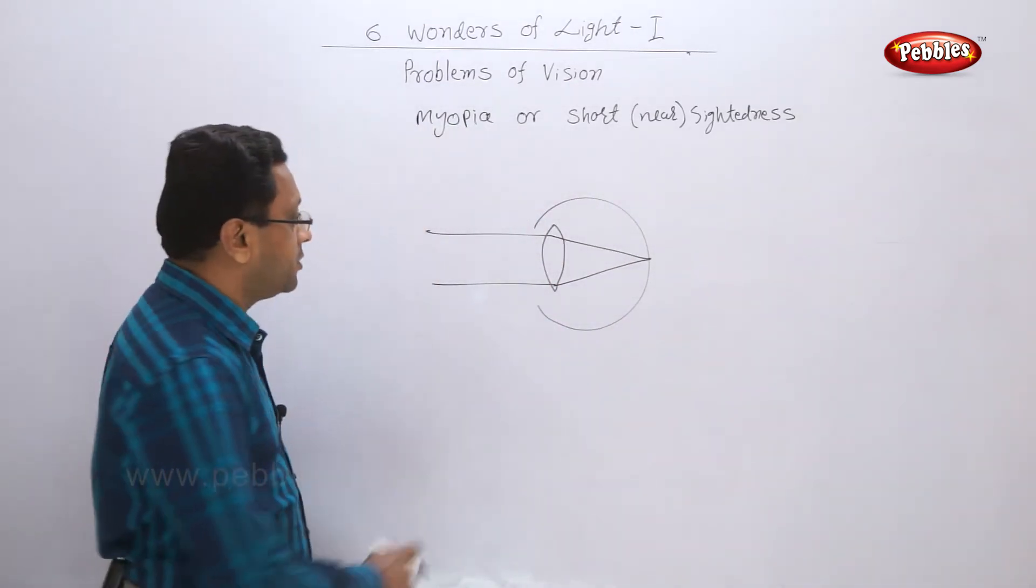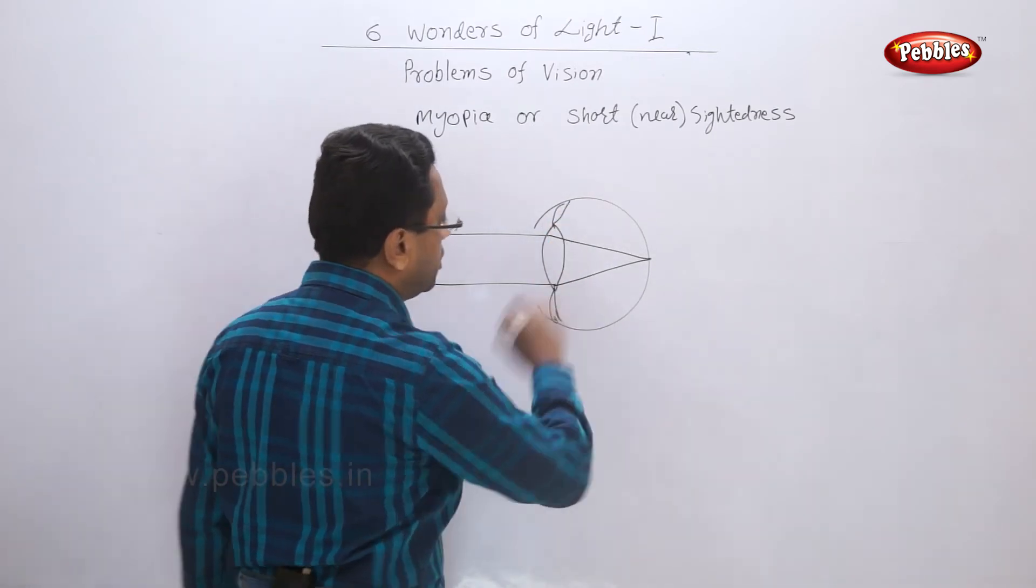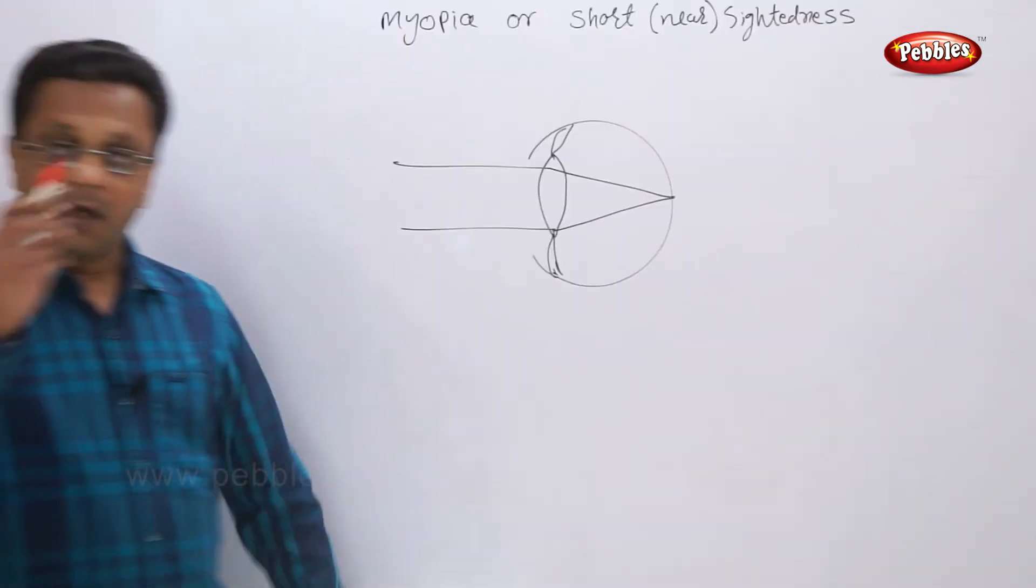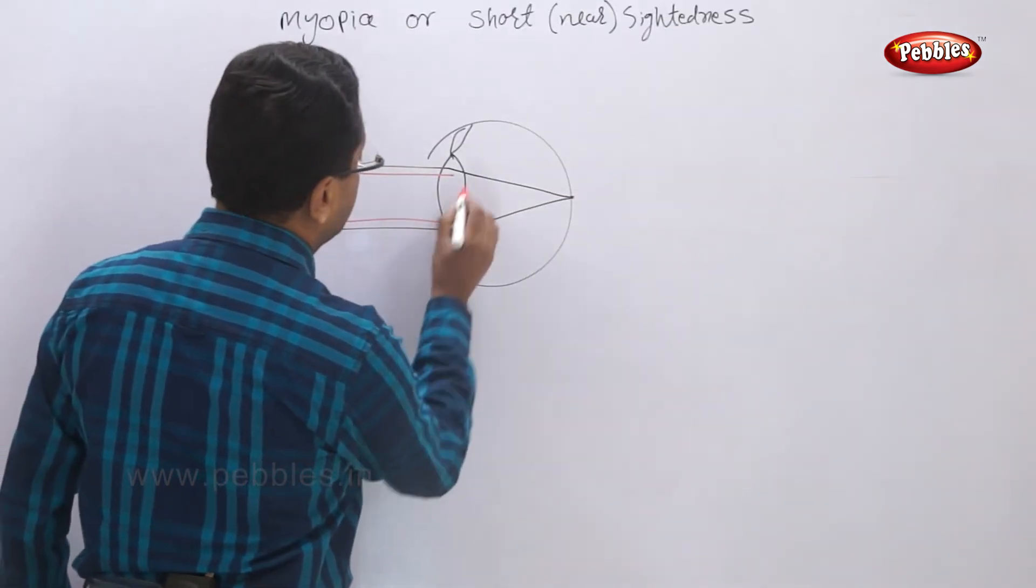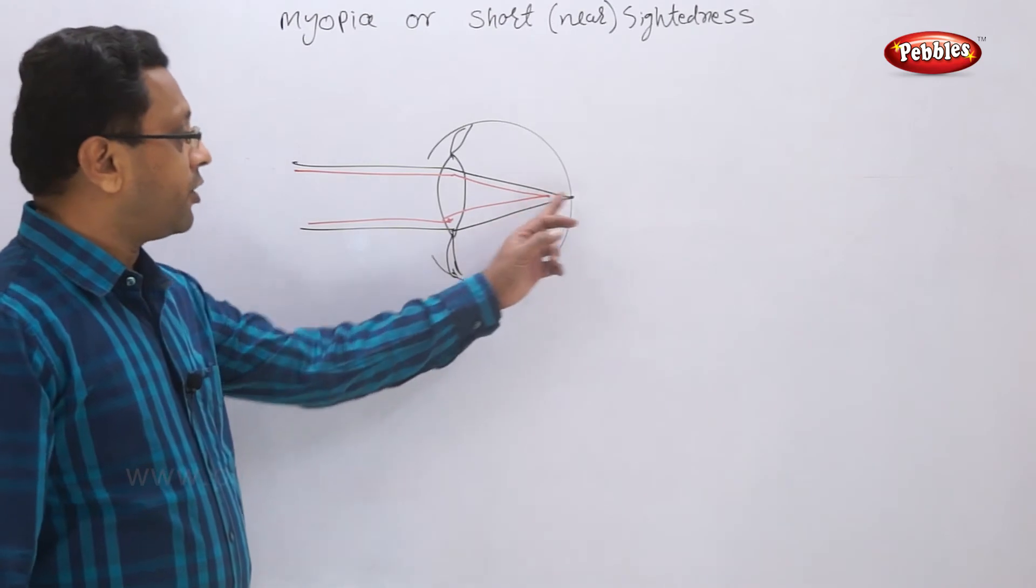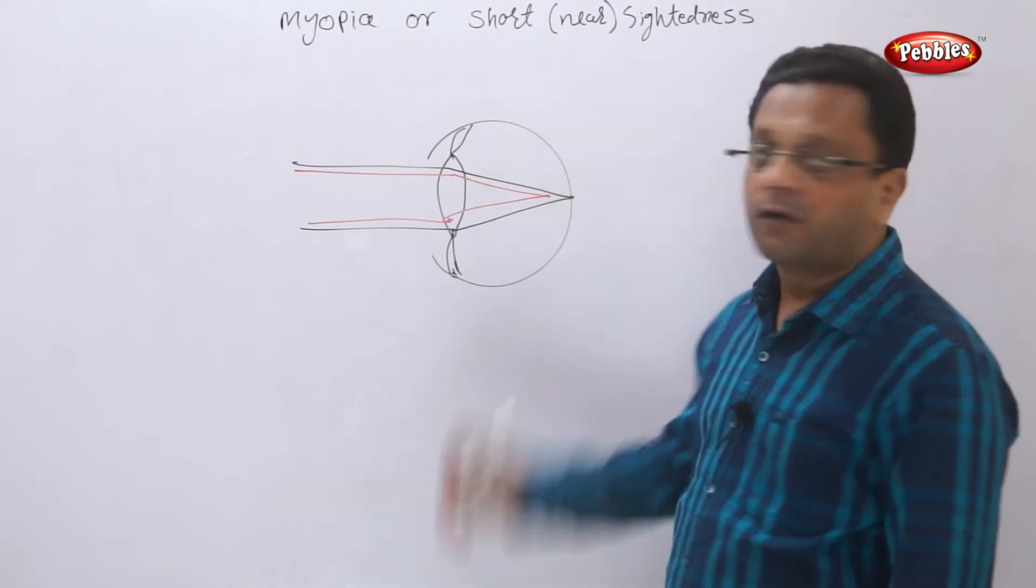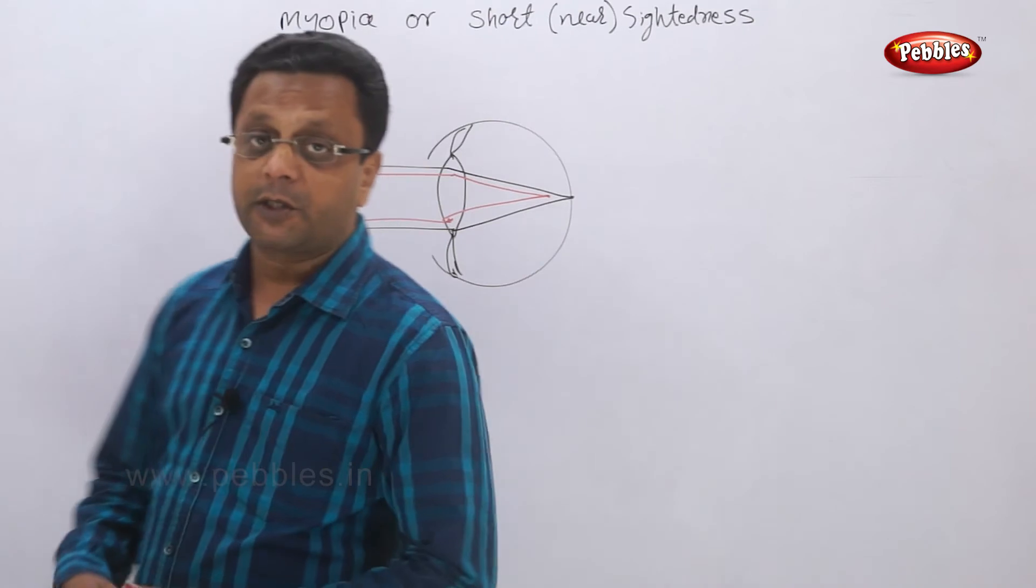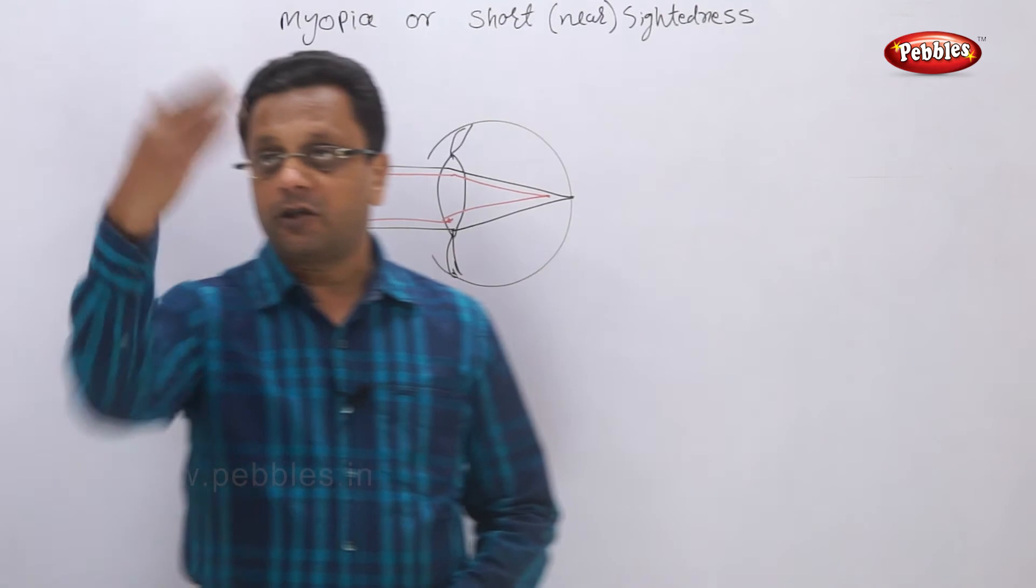But what will happen if the ciliary muscles are weak or they are not able to relax properly? Simple thing, this image is formed in front of retina. The rays cannot reach till retina and an image is formed in front of retina. And at that time you will not be able to see the long distance objects properly. Your vision may get blurred while watching long distance objects.